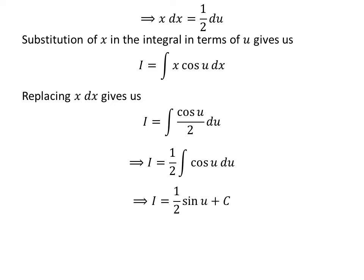We know the integral of cosine of u with respect to u is sine of u. So I is equal to half times sine of u plus capital C. Capital C is the arbitrary constant of indefinite integral. Never forget to add this constant.